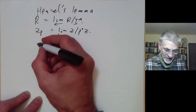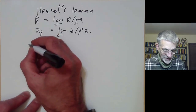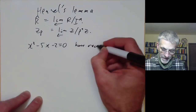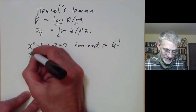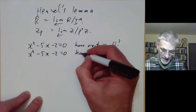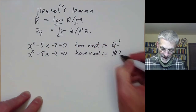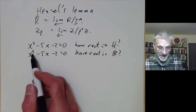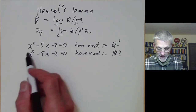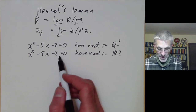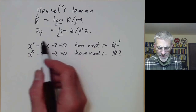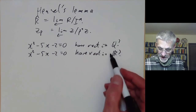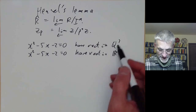A common problem is to find roots of equations, so let's look at two problems. First: does x cubed minus 5x minus 2 equal 0 have a root in the rationals? Second: does x cubed minus 5x minus 2 equal 0 have a root in the reals? The second question is obvious: it's positive for large positive x and negative for negative x, so by the intermediate value theorem it must have a root in the reals. The first question requires more thought.